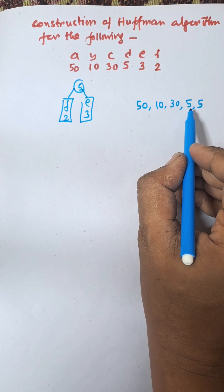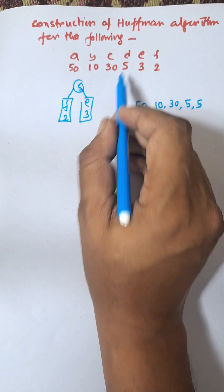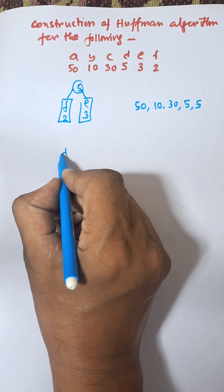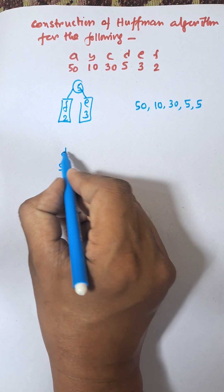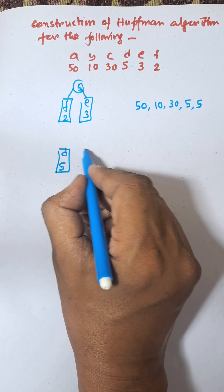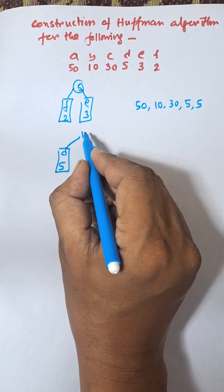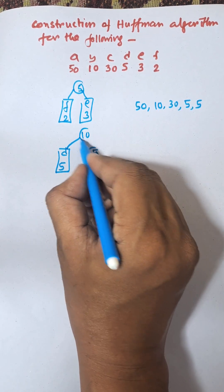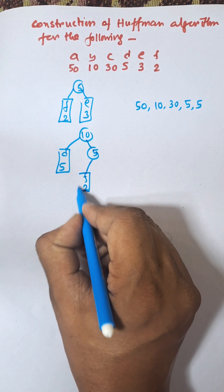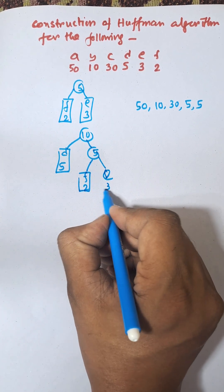The next two minimum numbers are 5 and 5. One 5 is for D. So D(5) and the combined node (F=2, E=3) giving 5 are added together. We will get 10.